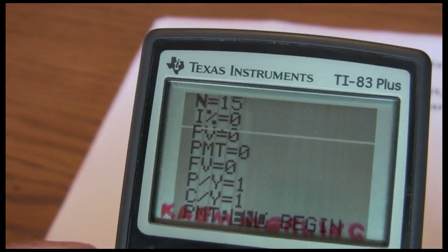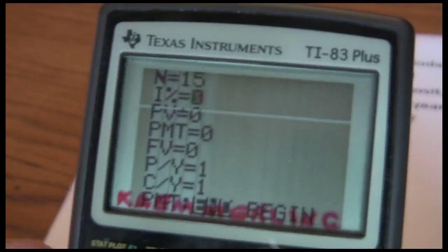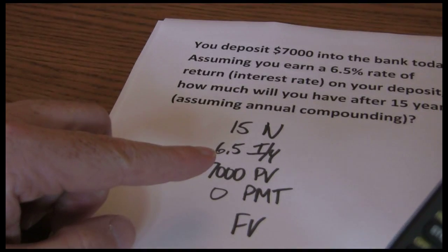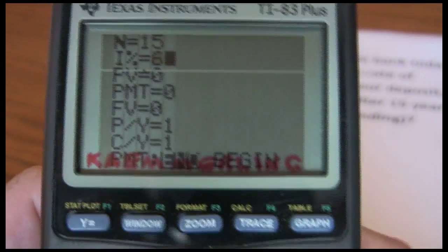So we plug that in. Use this arrow tab to go down. Our interest rate was 6.5%. So we're going to plug that into our calculator.